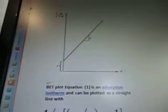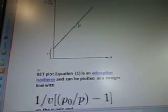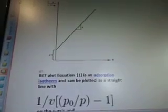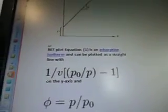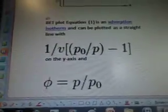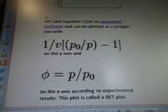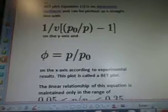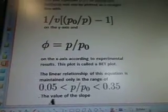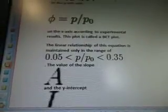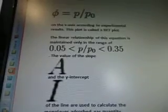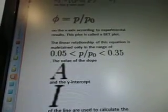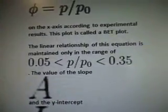And then there's this diagram, which is a BET plot equation. It's an adsorption isotherm and can be plotted as a straight line with this equation on the y-axis and this equation on the x-axis. According to the experimental results, the plot is called a BET plot. The linear relationship of this equation is maintained only in the range of 0.05 to 0.35.